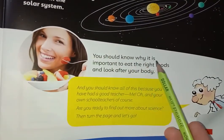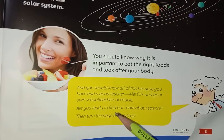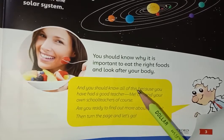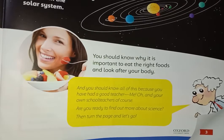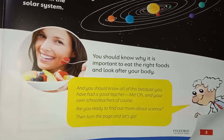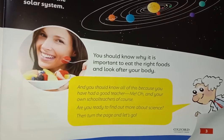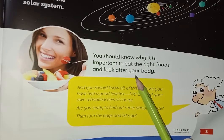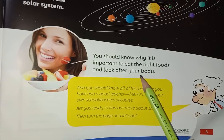You should know why it is important to eat the right foods and look after your body. We have to know why we eat right food. If we don't eat good food — like if we eat only green vegetables, this is not good, because our body also needs meat, milk, and proteins. And if we eat only meat and no vegetables, that is also not good, because we can develop allergic reactions.